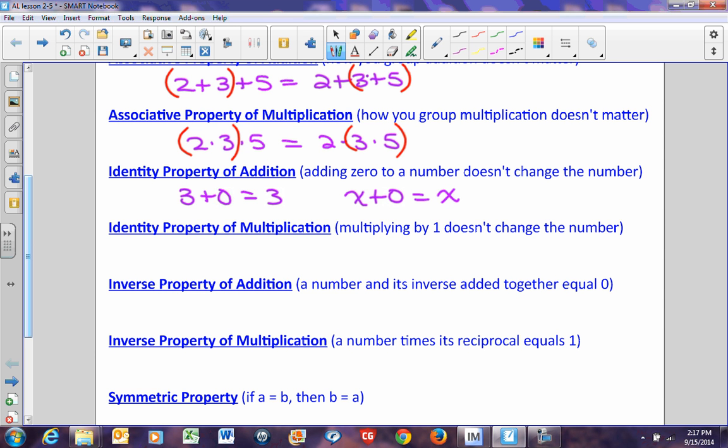Multiplication property of identity says that multiplying by 1 doesn't change our number. So in other words, 3 times 1 is still 3. Or n times 1 is still n. If you multiply anything by 1, it doesn't change the original problem.